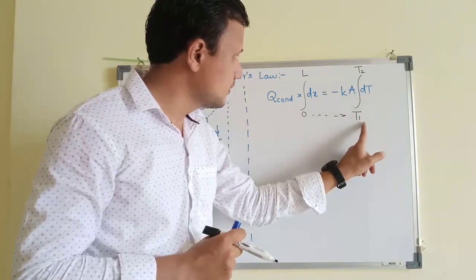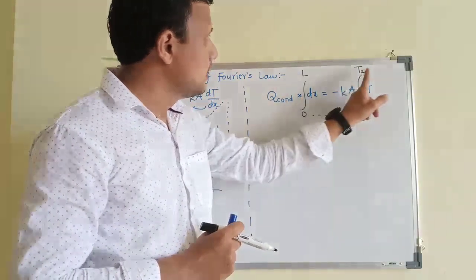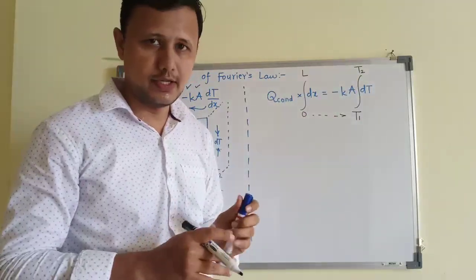At x is equal to 0, temperature is T1. At x is equal to L, temperature is T2. This is how we set the limits of integration.